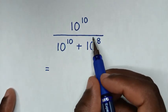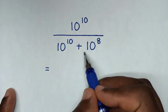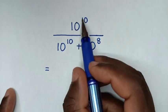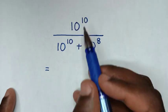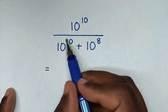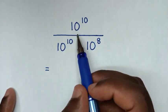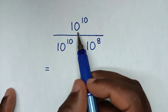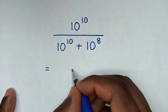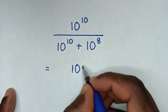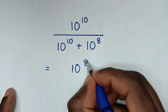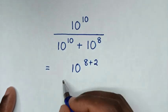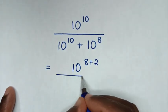From here, 10 power 8 is the lowest exponent. So 10 power 10 and this 10 power 10 will make 2 as common — 10 power 8. So this 10 power 10 is the same as 10 power 8 plus 2. Then over,